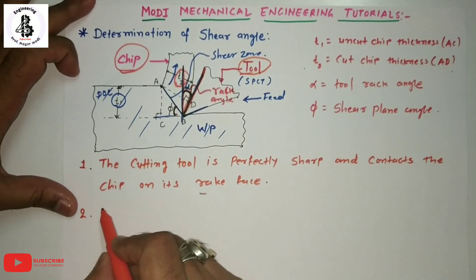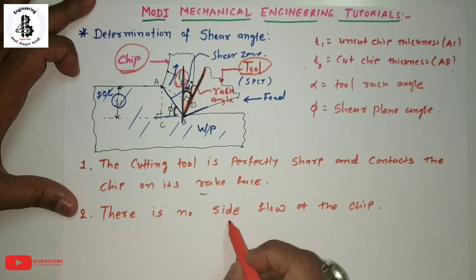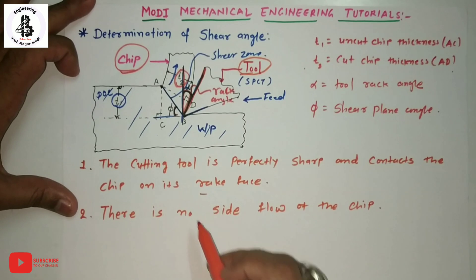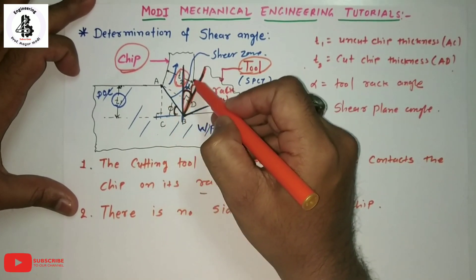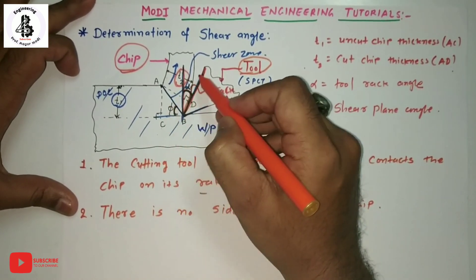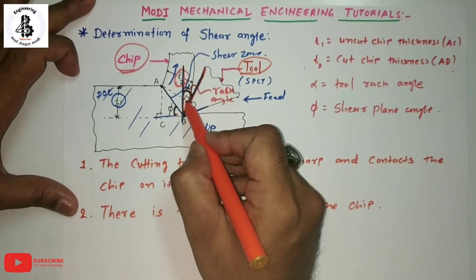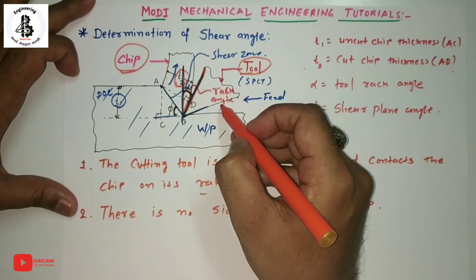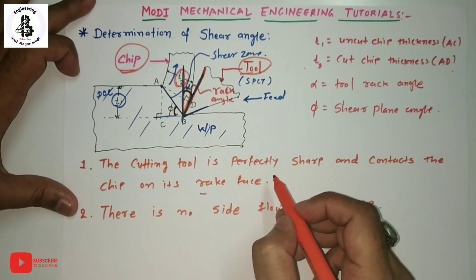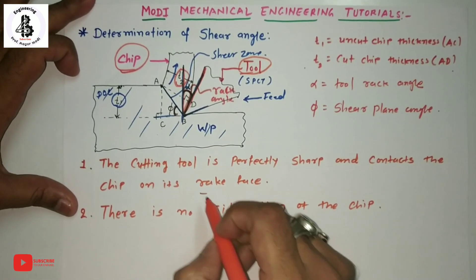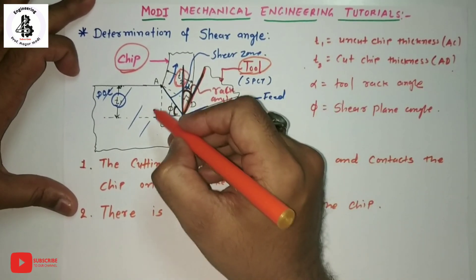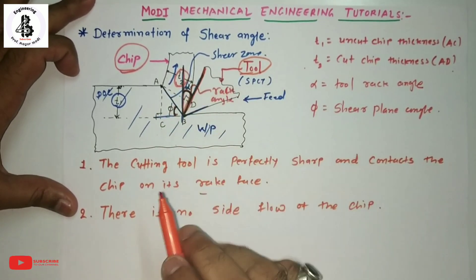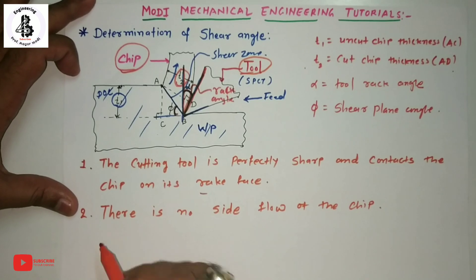Second assumption: there is no side flow of chips. The chips flow only onto the rake face. No segmental parts flow from the flank of the single point cutting tool. All chips flow only in contact with the rake face of the single point cutting tool. That is the second assumption.